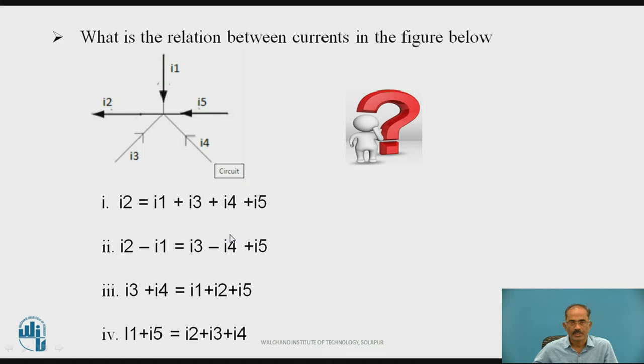I hope you might have got the answer. The answer for this question is, only one current is leaving, all the currents are entering to this node. Therefore, I2 can take one side and remaining currents in the other side. Therefore, I2 equal to I1 plus I3 plus I4 plus I5. Answer, first one is right.